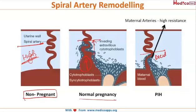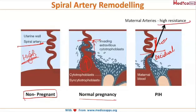In cases of PIH, this trophoblastic invasion occurs only up to the decidual segment. The invasion is absent in the myometrial segment, and as a result the maternal spiral arteries remain high resistance vessels.